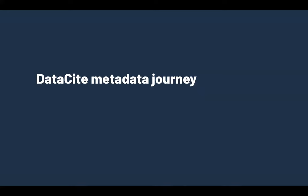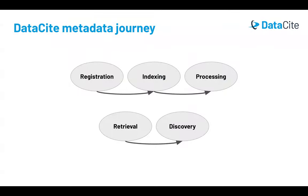Now that we've looked at the basics of the schema, let's see how this metadata gets into Datasite systems and what happens to metadata when a DOI is registered and metadata is provided to Datasite. When you register a DOI, that DOI's metadata goes on a journey. It starts with DOI registration, indexing in Datasite systems, and several processing steps. Then, from the metadata consumer side, metadata is retrieved and made available for discovery.